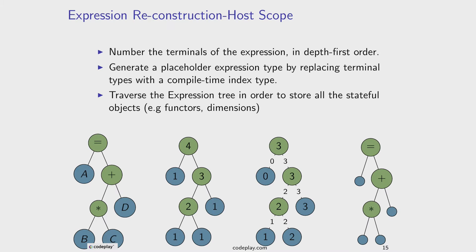The next step is going through the tree and labeling each node in depth-first order. With four nodes, we label from zero to three. So we traverse the tree depth-first: node A gets zero, the binary op gets one, B gets two, then D gets three. All nodes are labeled in depth-first order, so we know: this is zero, this is one, this is two, this is three.